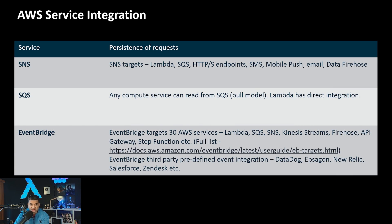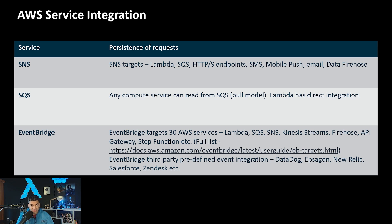SNS targets include Lambda, SQS, HTTPS endpoint, SMS, mobile push, email, and Kinesis Data Firehose. For SQS, any compute service can read from the queue, and Lambda has direct integration. EventBridge has more integrations than SNS - it targets over 30 AWS services including Lambda, SQS, SNS, Kinesis stream, Firehose, API Gateway, Step Functions, and more. EventBridge also has third-party integration on the producer side - if you are sending messages from Datadog, PagerDuty, etc., EventBridge knows the message schema and guides you through the integration process.